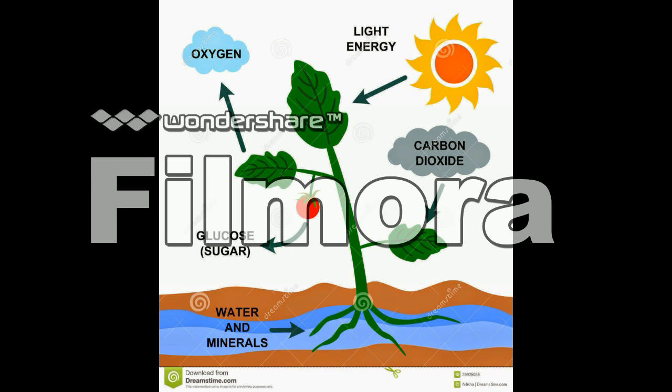By sunlight, hydrogen joins to produce organic matter — the substance the plant needs for its development, which serves as food. Photosynthesis is a beneficial chemical process for living beings, consuming toxic gases.